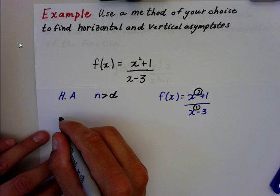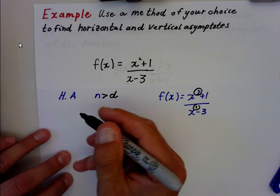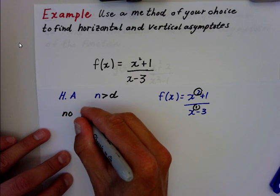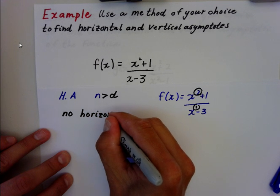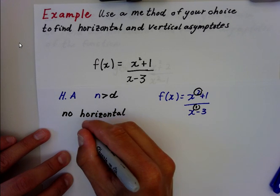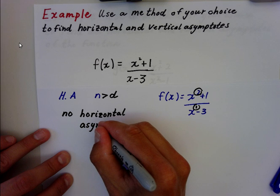That means by our rules, there is no horizontal asymptote. That's one of the rules, one of the three, the big three.